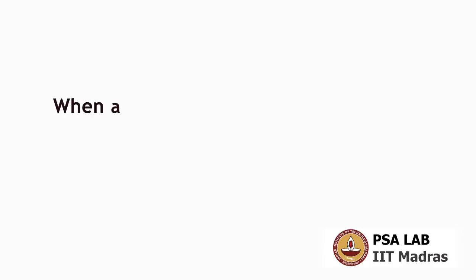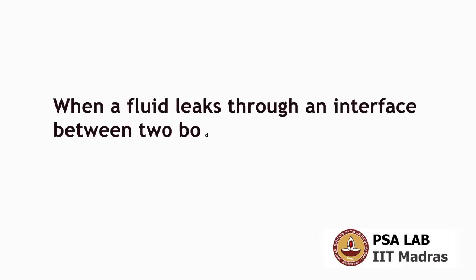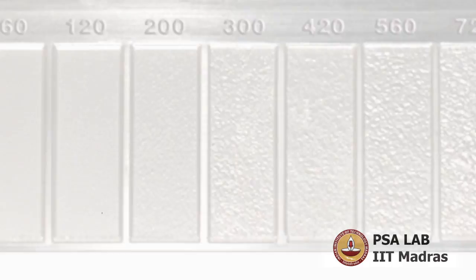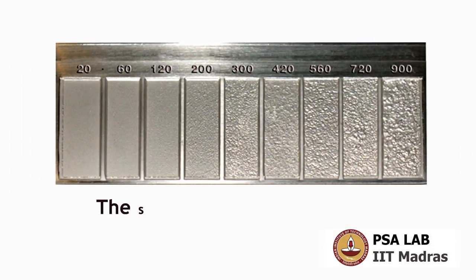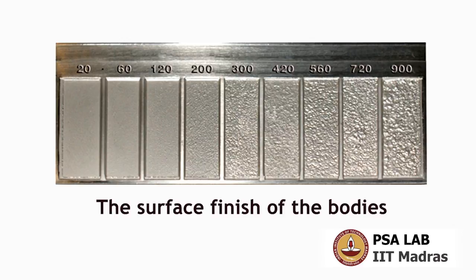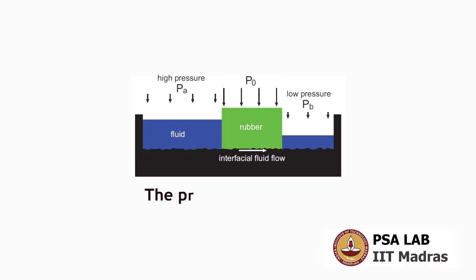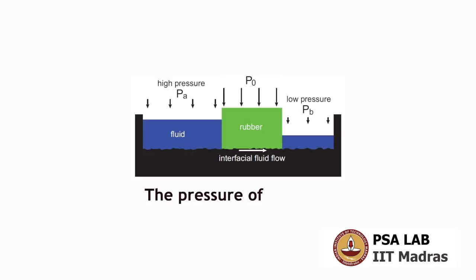When a fluid leaks through an interface between two bodies, the leak rate can depend on: 1. the surface finish of the bodies, 2. the contact load between the two bodies, and 3. the pressure of the fluid.